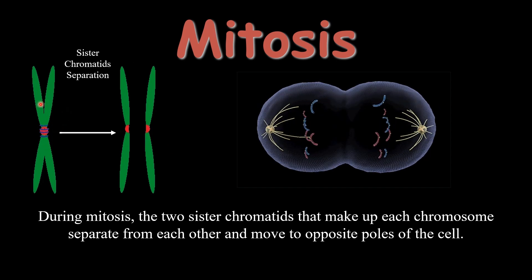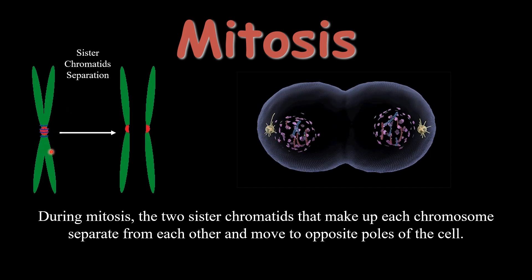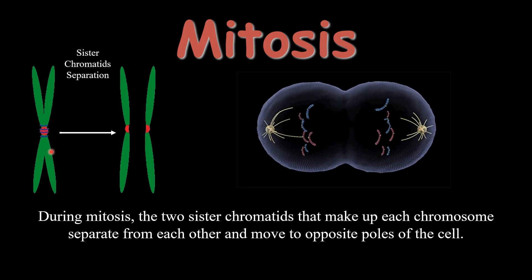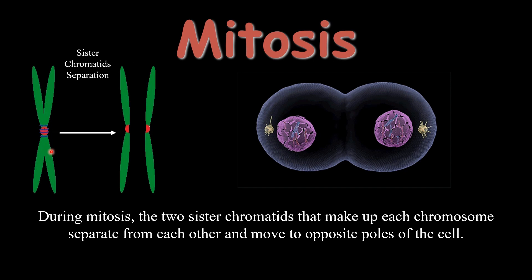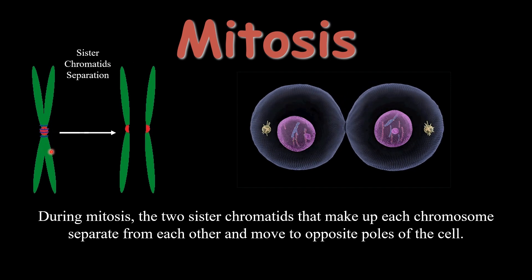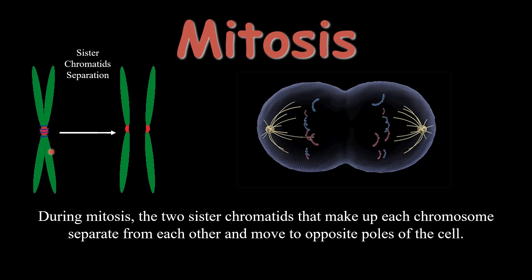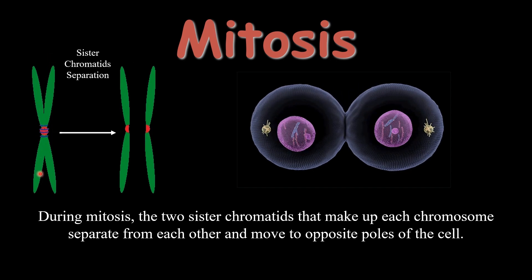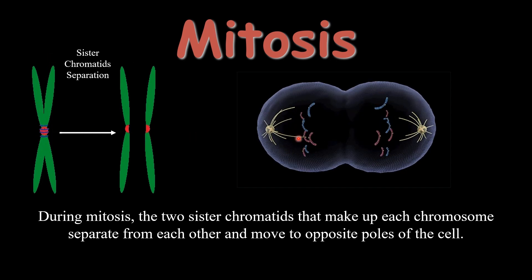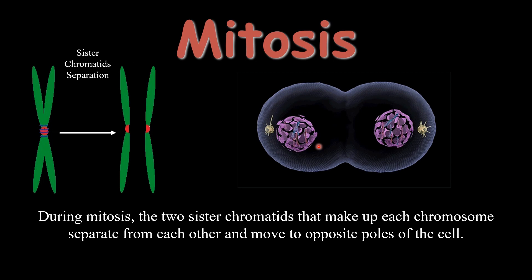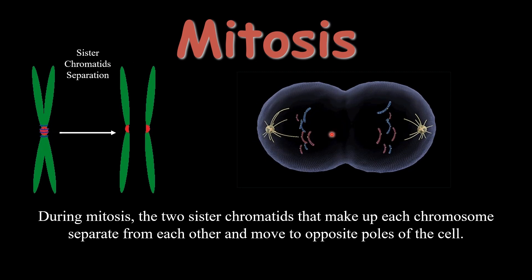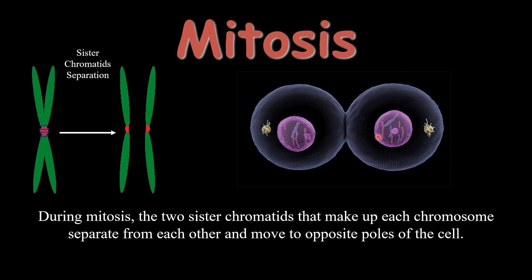This is the double-stranded chromosome found in the parent cell during mitosis. When the separation or division of the cells occurs, it causes the separation of the sister chromatids. One sister chromatid will move to one pole and the other sister chromatid will move to the other pole. So the daughter cells will have the identical number of chromosomes as that of the parent cell.